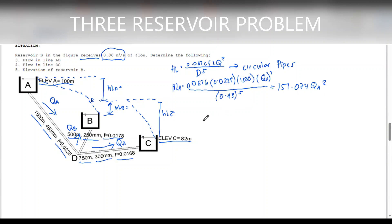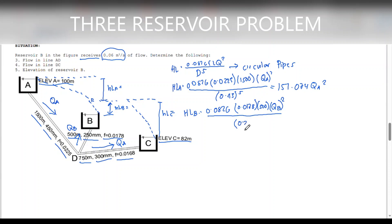Next, we will be solving the head loss of reservoir B. So, 0.0826 × F (0.0178) × L (500) × QB² over D (0.25) raised to 5. This will be equal to 752,783 QB².